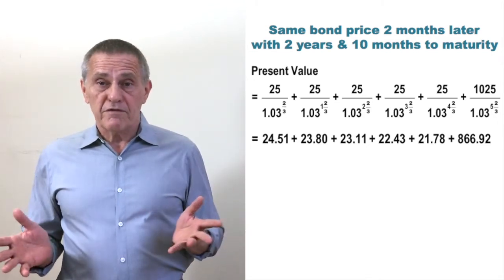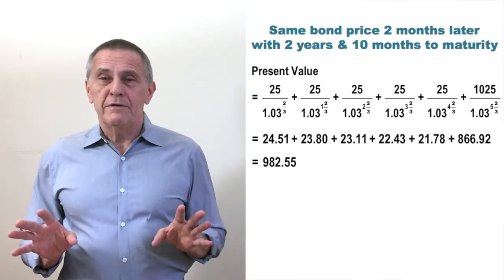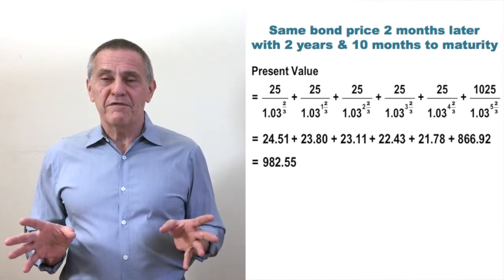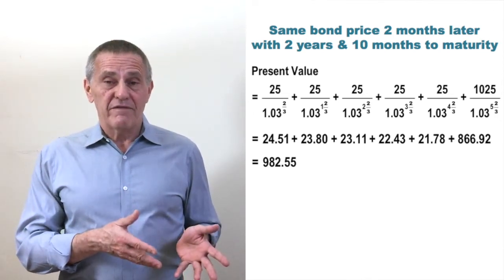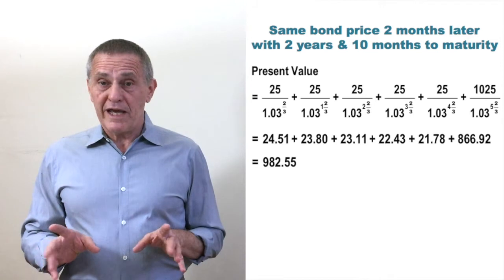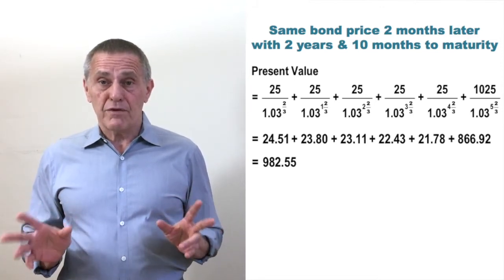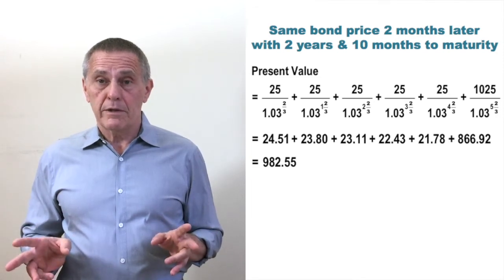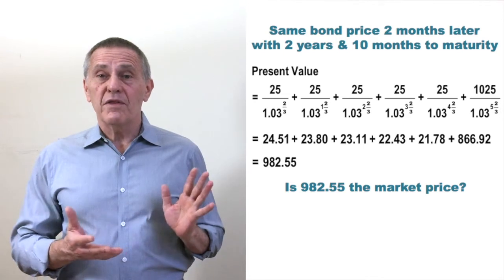So again, by summing the present value of the cash flows, we get a present value of the cash flows of $982.55. But is that $982.55 subject to the same interpretation as the $972.91 that we got as the present value of the cash flows when it was a three-year bond? In other words, is that $982.55 the price?